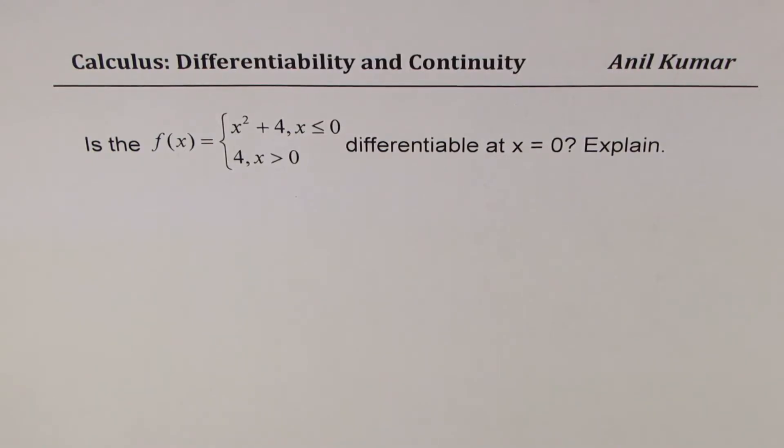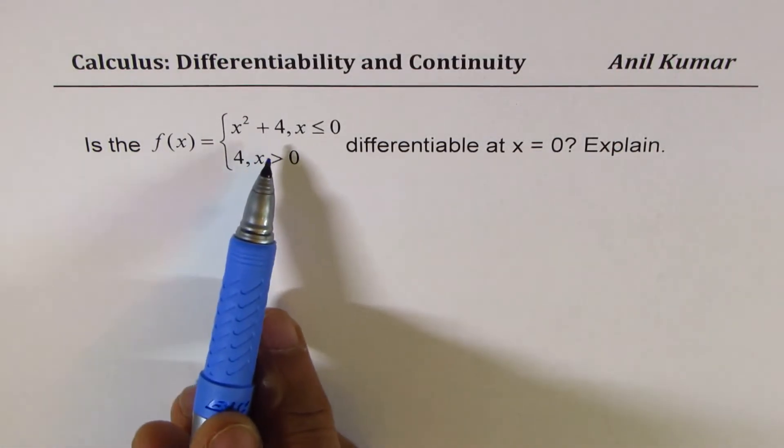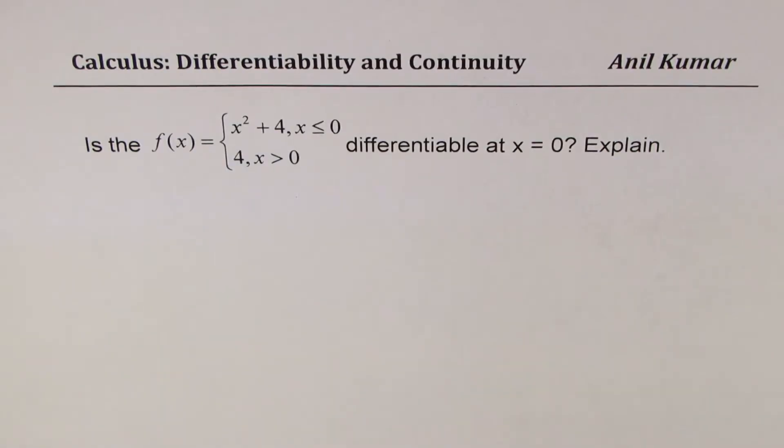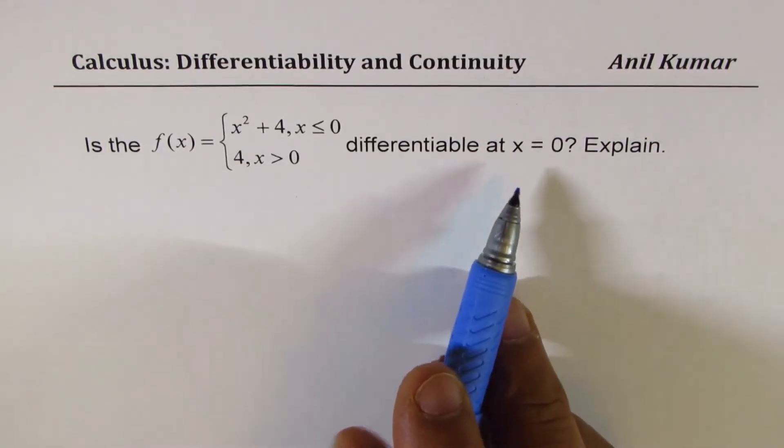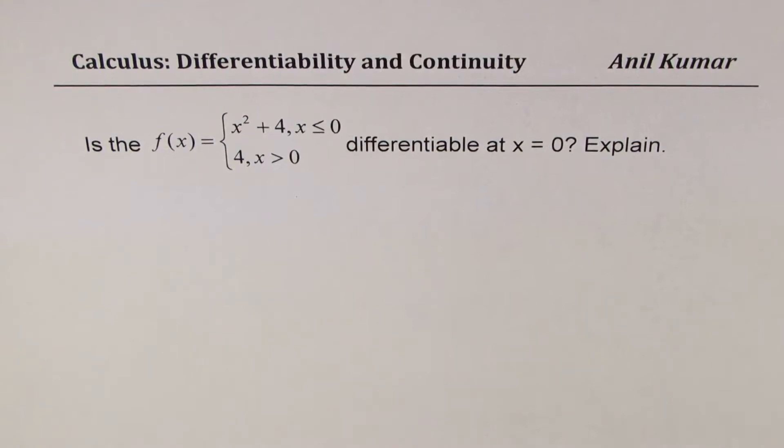We have taken up a piecewise function here and we'll check the differentiability at a particular value of x. The question here is: is the function f(x) = x² + 4 for x ≤ 0, or 4 when x > 0, differentiable at x = 0? So you need to check differentiability at x equals 0.